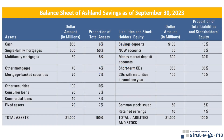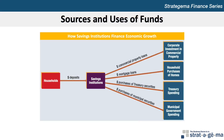This exhibit summarizes the main sources and uses of funds of SIs by showing the balance sheet of Ashland Savings, a fictitious SI that reflects the average allocation of assets for all SIs. Ashland's main asset is mortgage loans, representing 50% of total assets. SIs channel funds from depositors with surplus funds to households purchasing homes, and also channel funds to support investments in commercial property, serving a major role in the development of housing and commercial property markets.